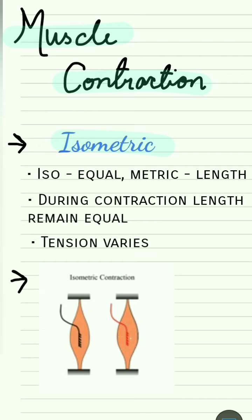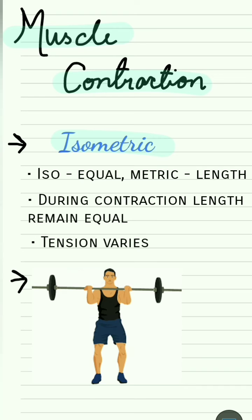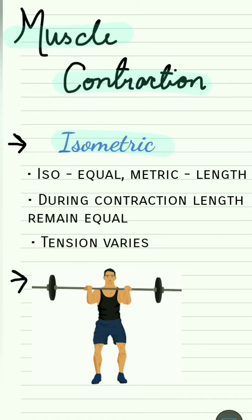Although tension increases during isometric contraction. For example, holding a dumbbell in hand without moving it — tension is required to hold the dumbbell, but since the hand is not moving, there is no change in the length of the muscle.